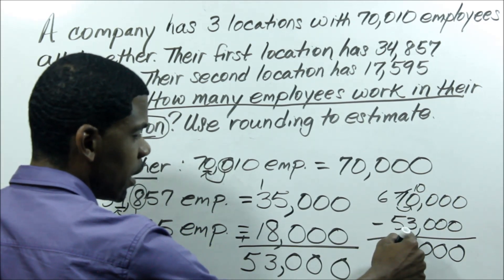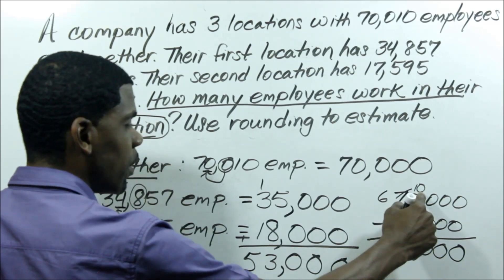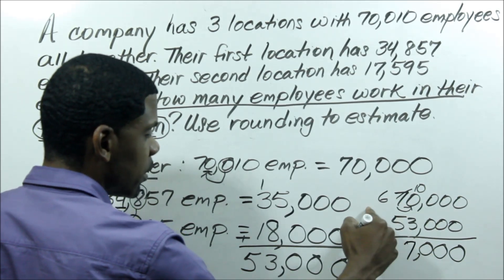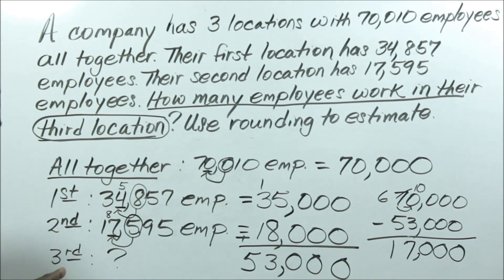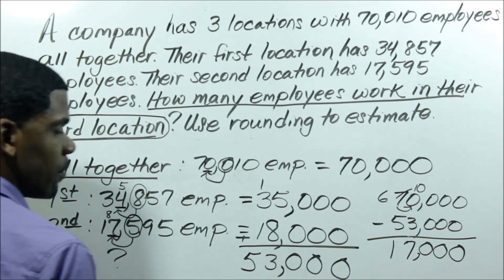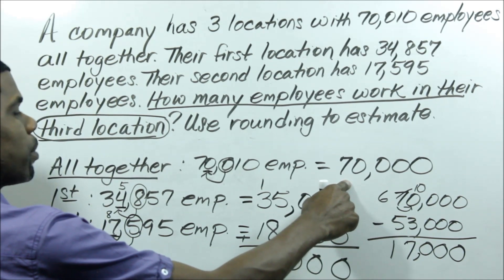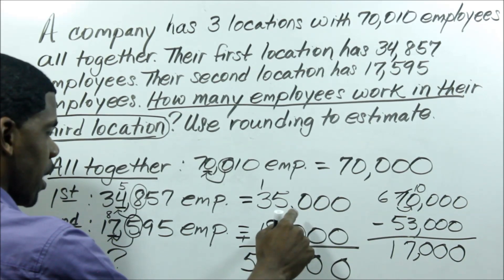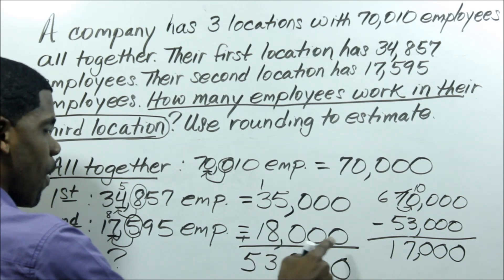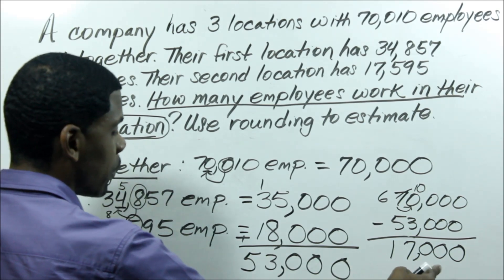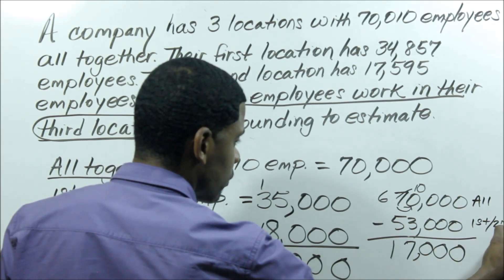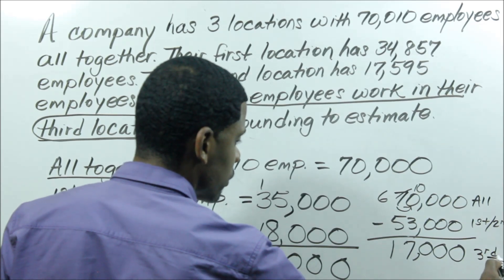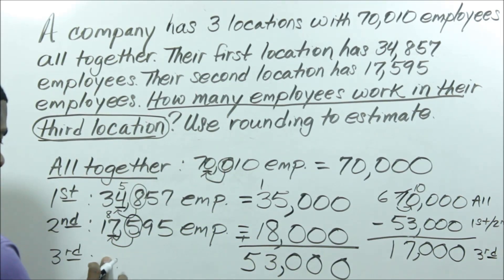Now can I subtract ten minus three? Yes. And six minus five? Yes. Ten minus three is seven, and six minus five is one. So after subtracting the combined employees of my first and second locations from the total, I know my third location has approximately 17,000 employees.